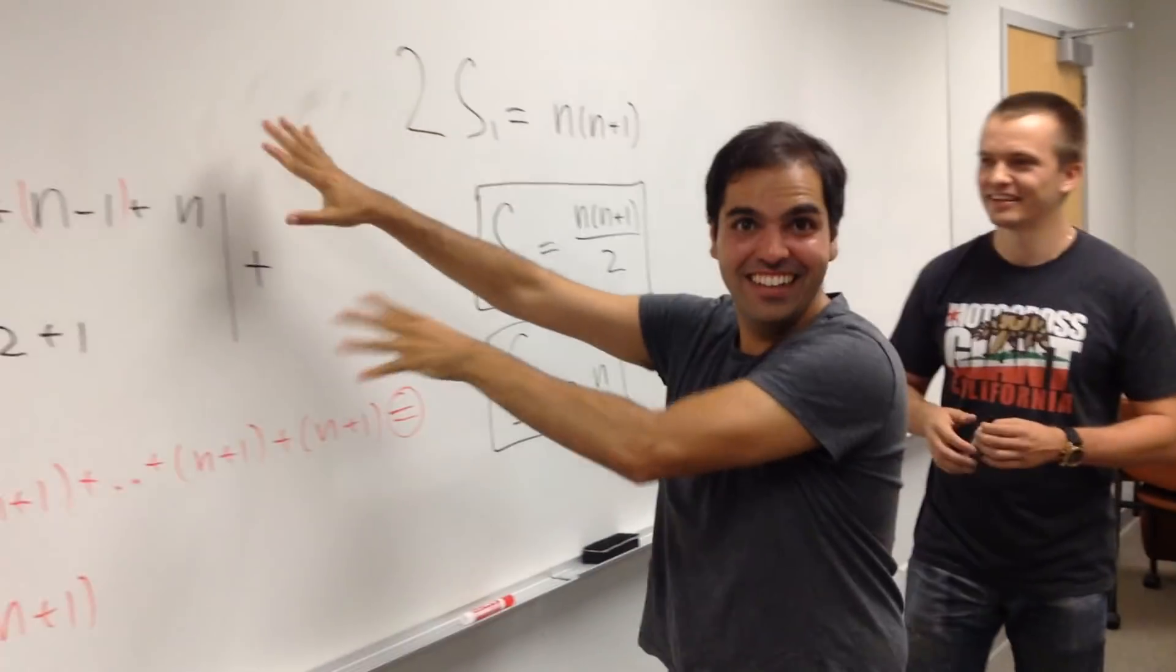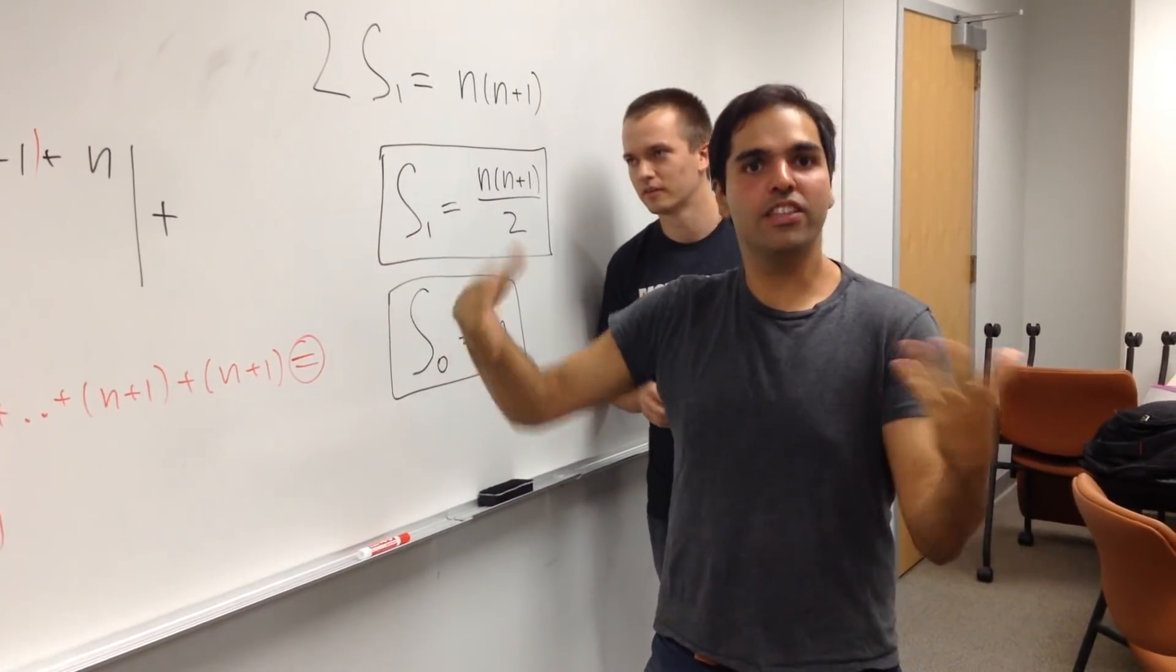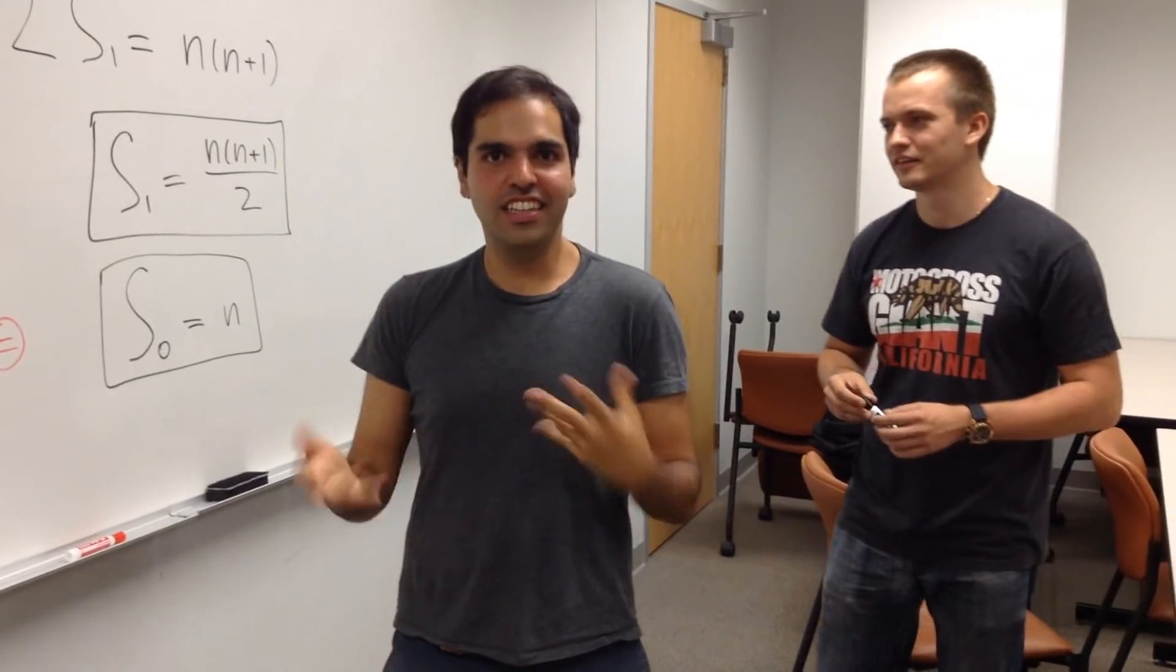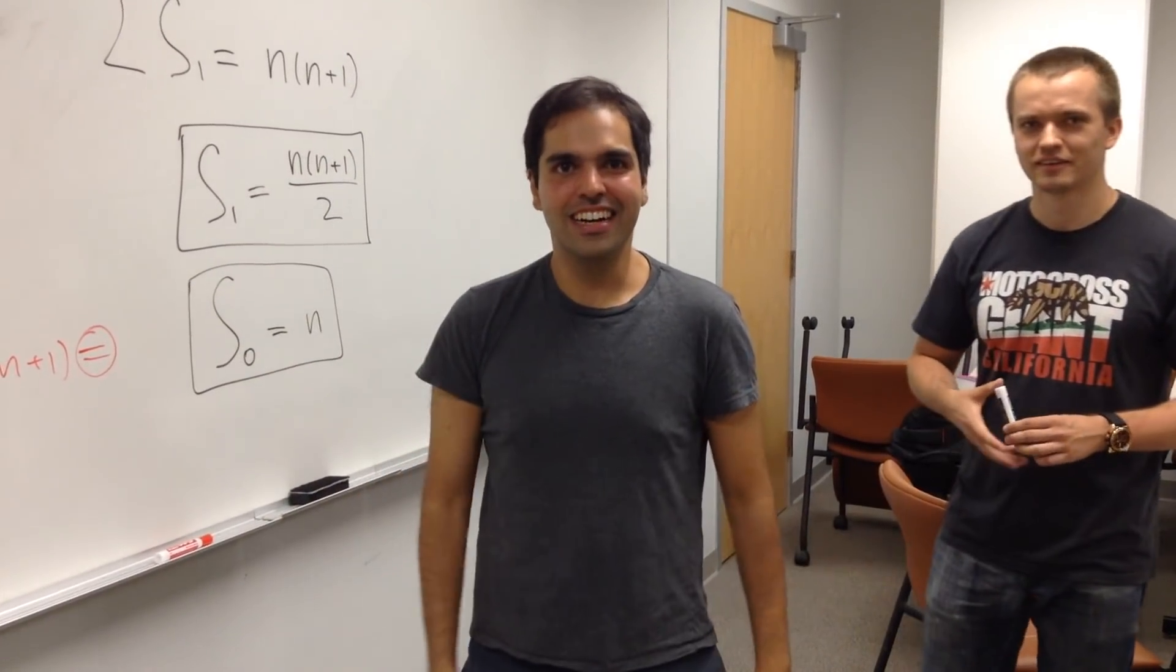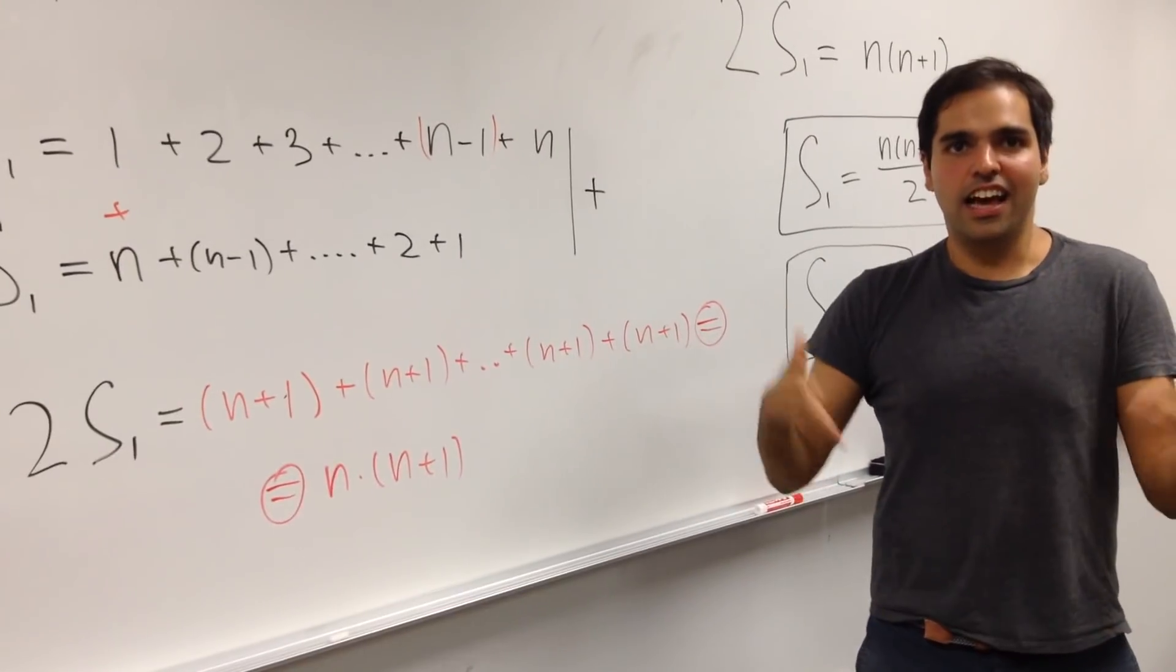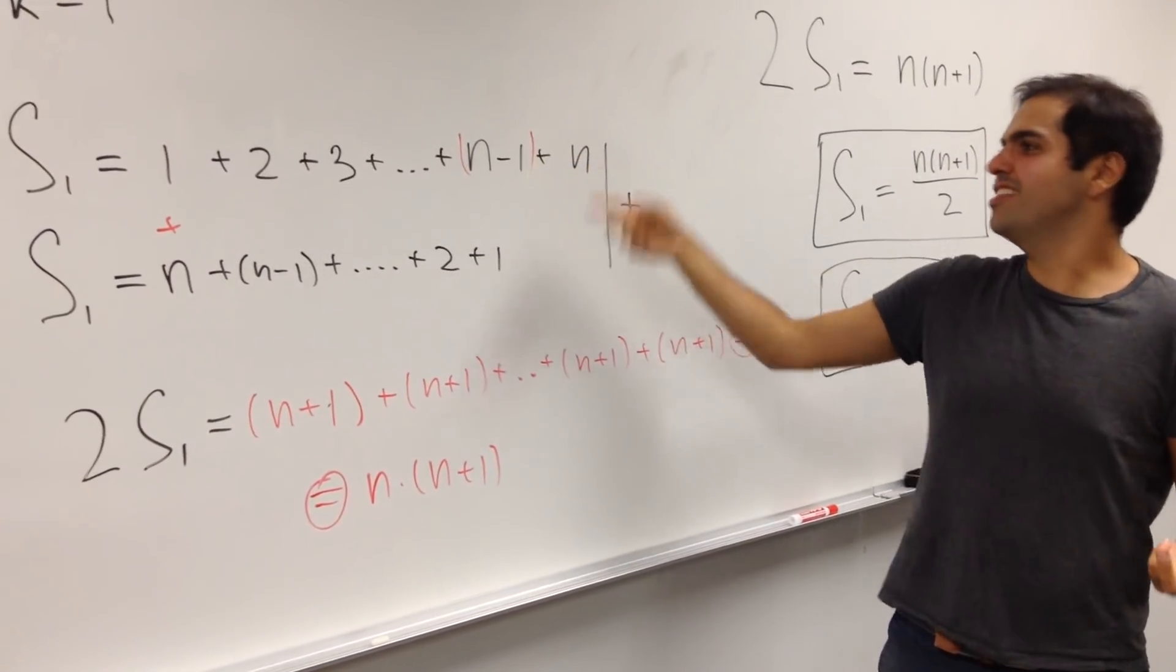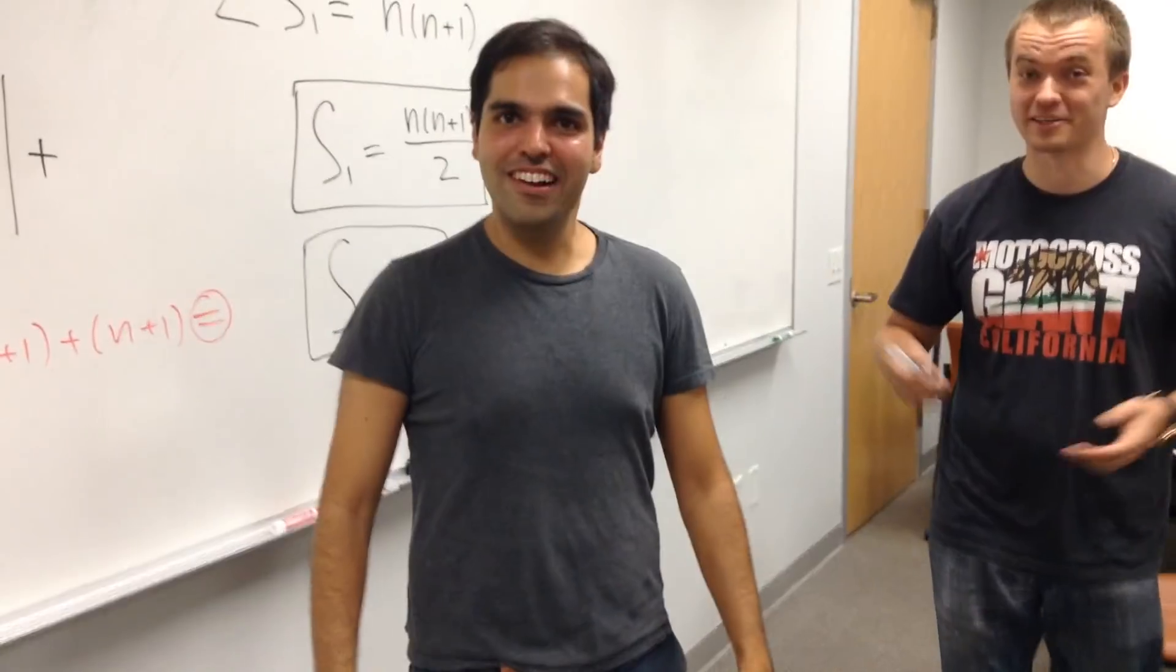I want to tell you the back story behind this. So this is a problem that was originally given to Gauss when he was in elementary school. And basically the teacher, she wanted to distract Gauss for like an hour or so. And she said, well, calculate the sum from 1 up to 50. And she thought it would take an hour to do that. But it turns out he just found this clever way. And after two minutes, he was like, oh, there's a sum. Very smart guy.